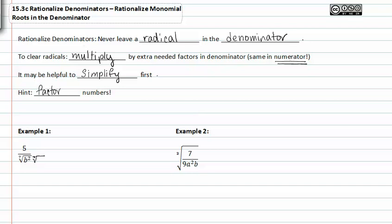As you recall, when we multiply, our indexes have to match. The index here is seven, and if we want to get rid of the radical altogether, we need five more b's to build up this b to the second so that it matches the index. To clear radicals we multiply by the extra needed factors in the denominator and the numerator, so we place the seventh root of b to the fifth in the numerator as well.